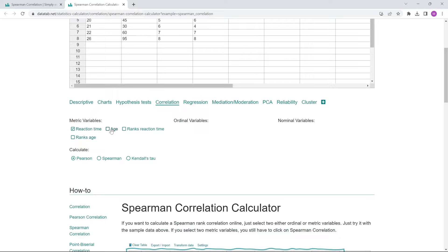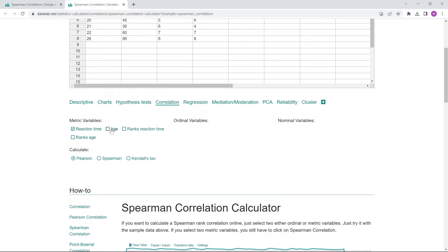If we use DataTab for the calculation of the example, we get a p-value of 0.002. The p-value is therefore smaller than 0.05 and we can therefore reject the null hypothesis that in the population the correlation coefficient is 0. Thanks for watching and I hope you enjoyed the video.